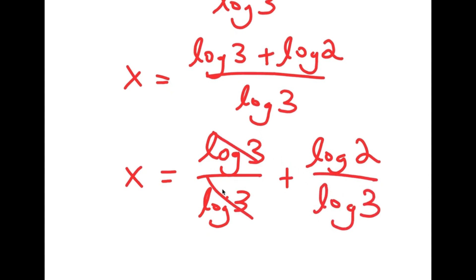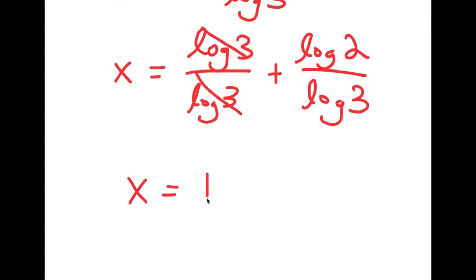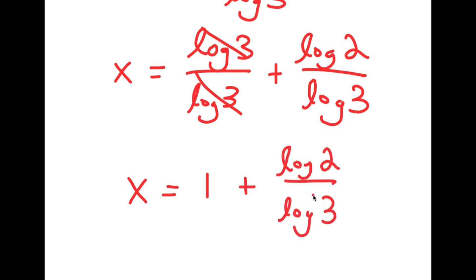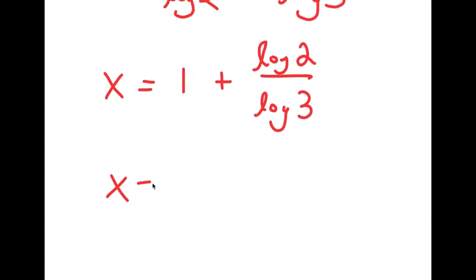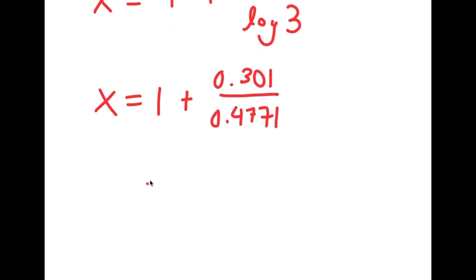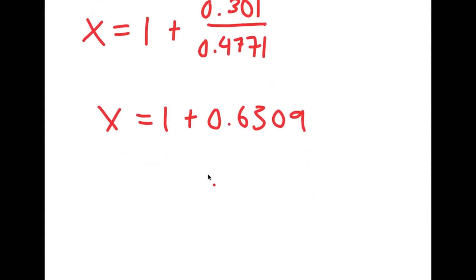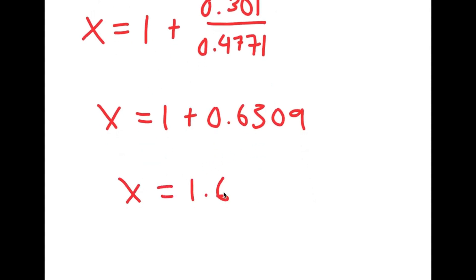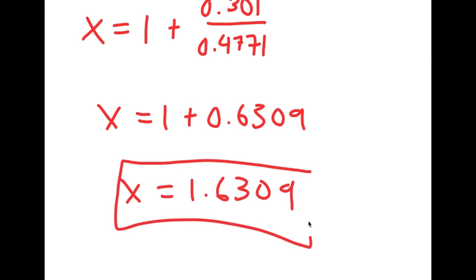I can rewrite this as log 3 over log 3 plus log 2 over log 3. Now log 3 over log 3 cancels out, so I get x is equal to 1 plus log 2 over log 3. Log 2 equals 0.301 and log 3 equals 0.4771, so this equals 1 plus 0.6309, which gives x equals 1.6309. So this is my answer.